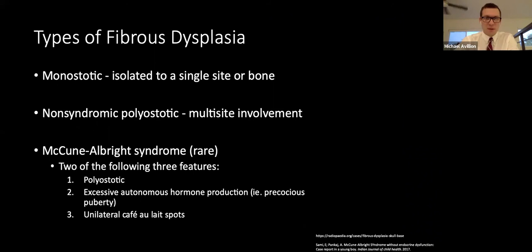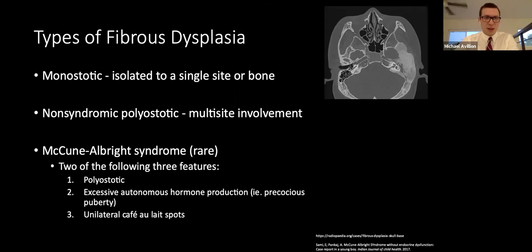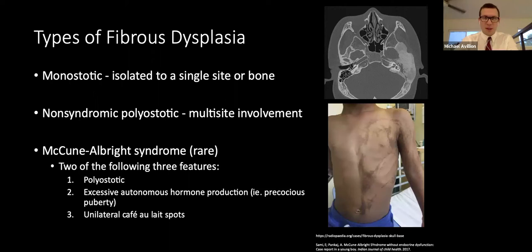There are three types: monostatic — isolated to a single site or bone; non-syndromic polyostatic — multi-site involvement; and McCune-Albright syndrome. Monostatic is the most common form and usually occurs in the skull, ribs, femur, or tibia. In the polyostatic form, skull lesions are seen in more than 50% of patients. Monostatic fibrous dysplasia has less bone deformity, and there is no evidence it converts to polyostatic.